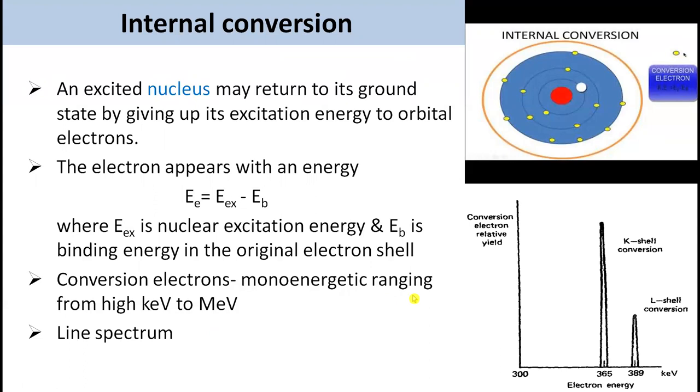Because the conversion electron can originate from any one of a number of different electron shells within the atom like the K-shell, L-shell or the M-shell, a single nuclear excitation level generally leads to several groups of electrons with different energies. The spectrum becomes more complicated in those cases in which more than one excited state within the nucleus is converted.